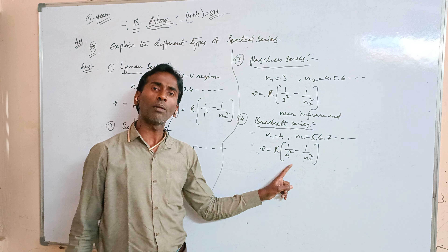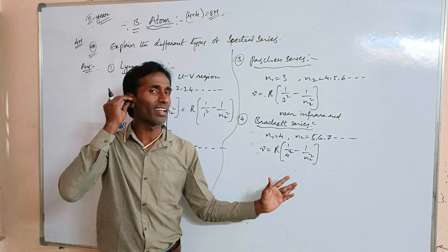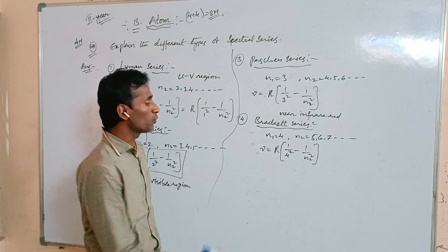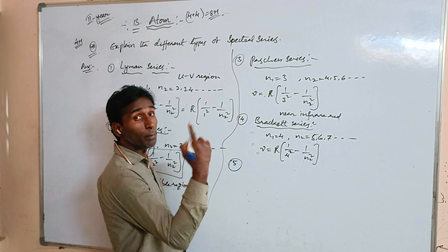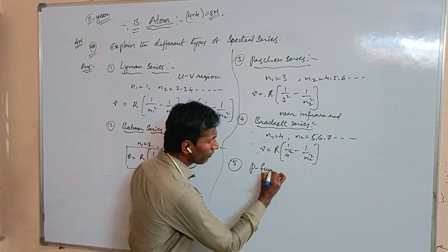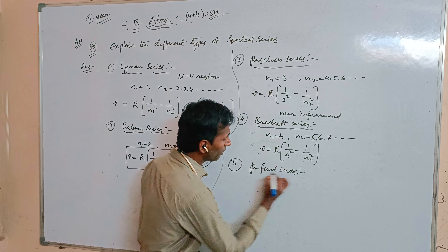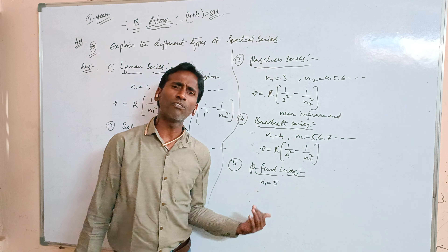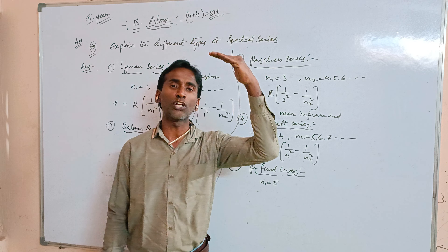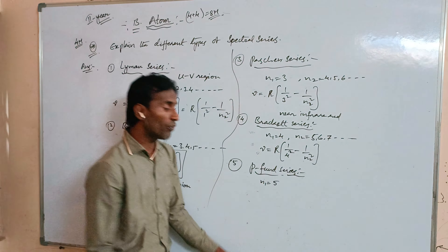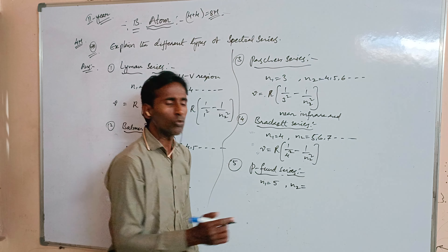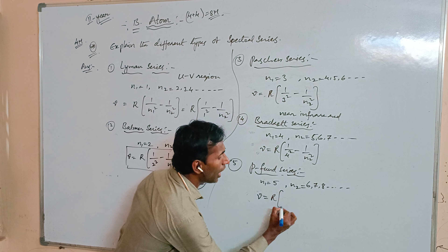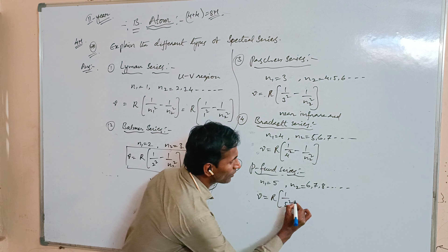The fourth series is the Brackett series. In the Brackett series, the transition of an electron is jumped from a higher energy state to a lower energy state where n1 equals 4, and n2 equals 5, 6, 7, and so on. The frequency formula is: ν equals R into (1/4² minus 1/n2²). This series is observed in the infrared region.